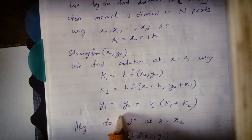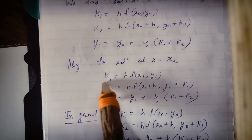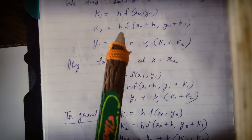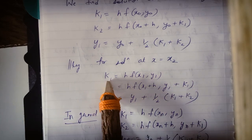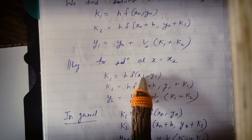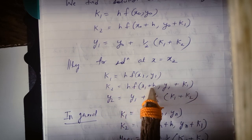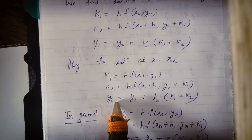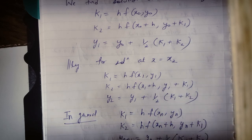This is Runge-Kutta method of order 2. Similarly, we repeat these steps. If we need the value at x equals x2, we do the same y steps again. Previously we used x0 and y0; now we will use x1 and y1. So k1 becomes h into f of x1, y1; k2 becomes h into f of x1 plus h, y1 plus k1; and y2 becomes y1 plus half of k1 plus k2. Everything is the same — only the points change.